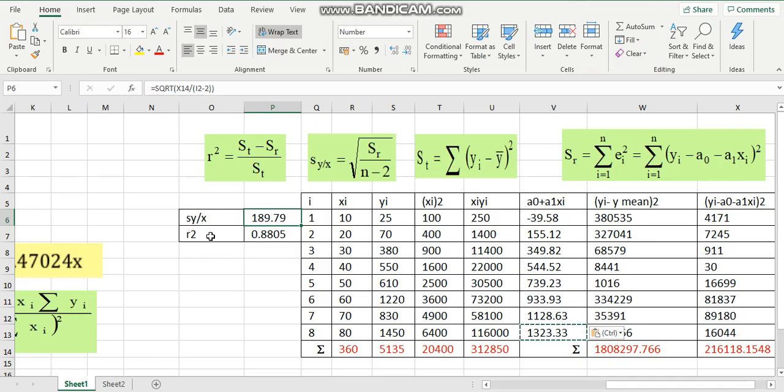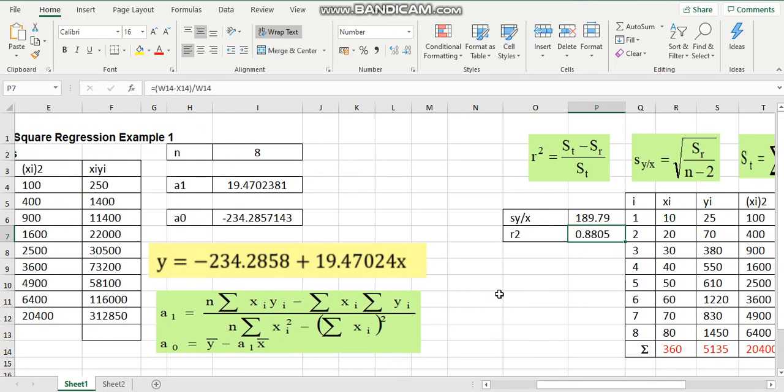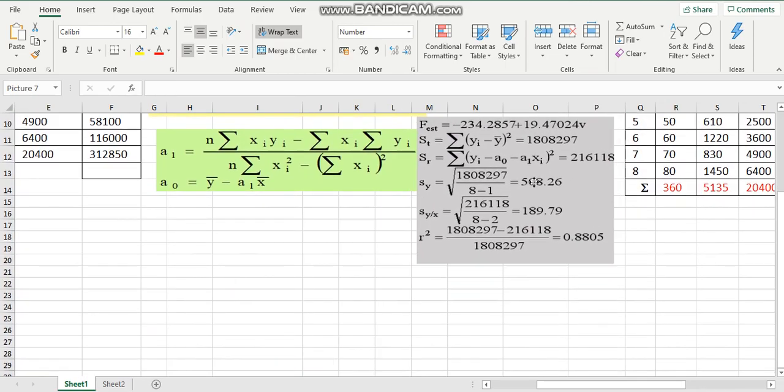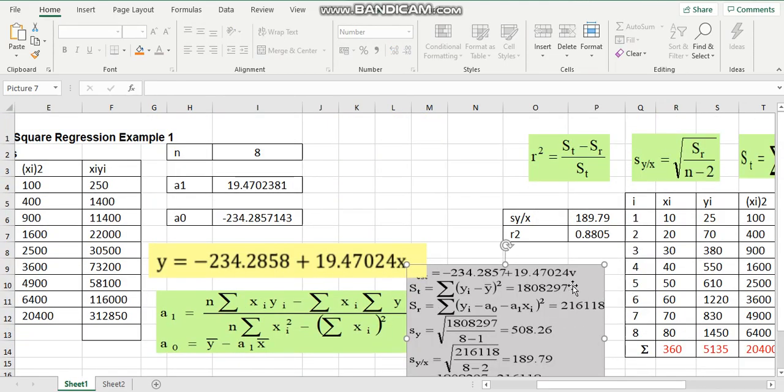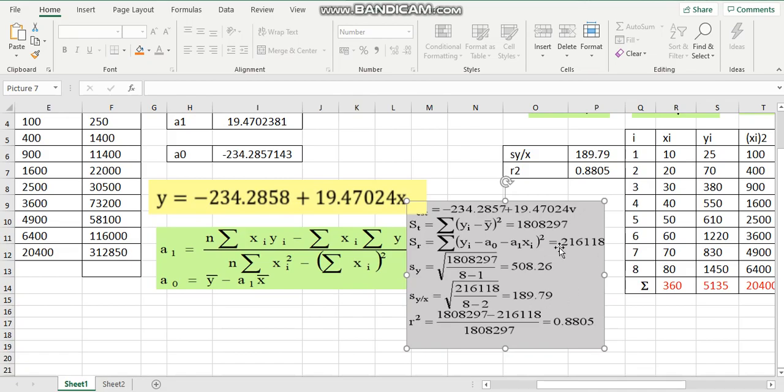Same to r-square, where we will key in the formula ST minus SR divided by ST. Then, we will get the answer. Let's double check with the answer that we have determined using the calculator. That's correct.